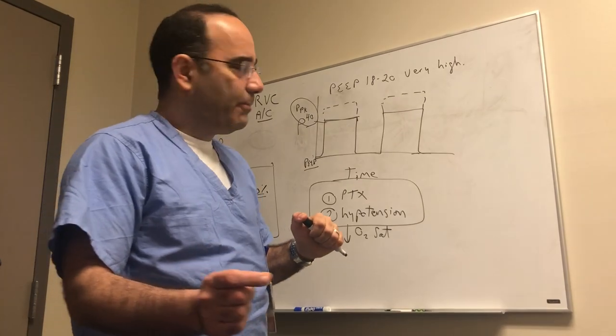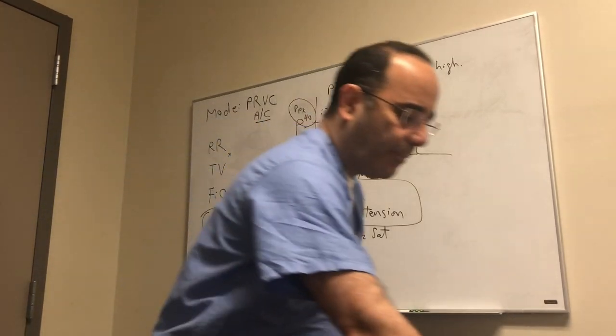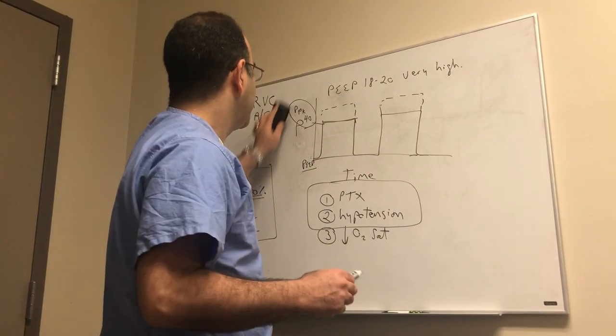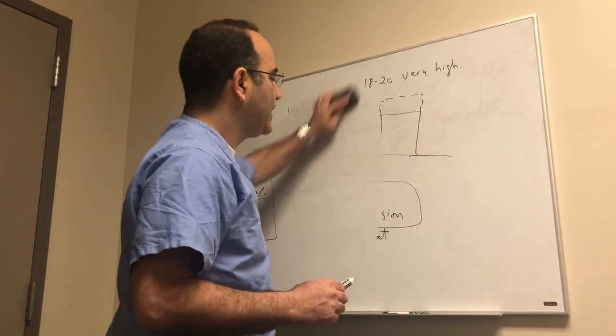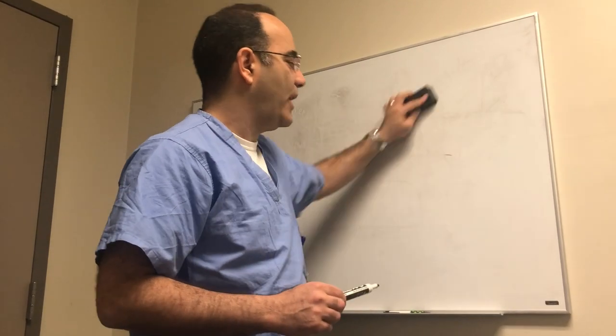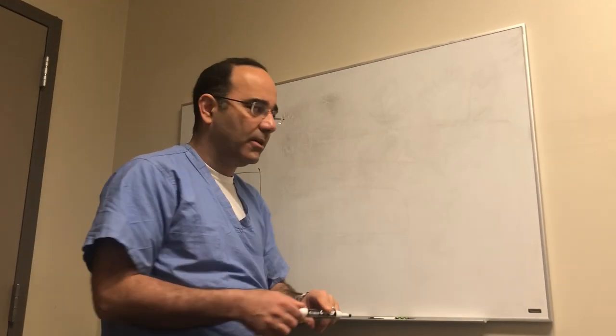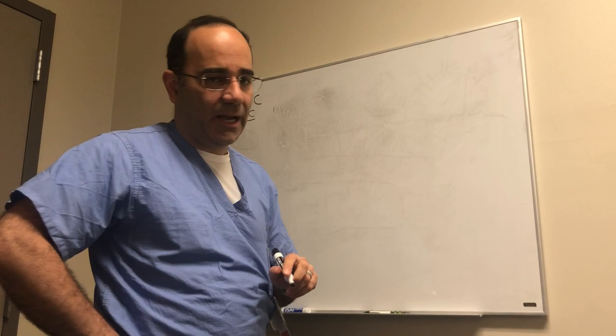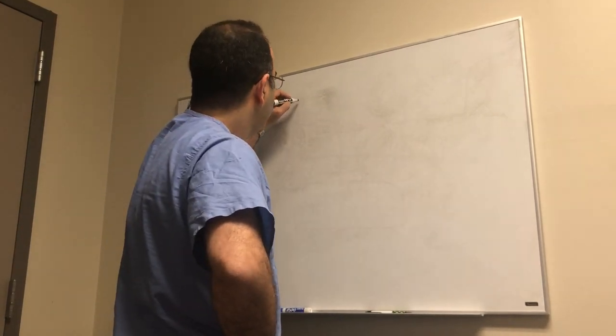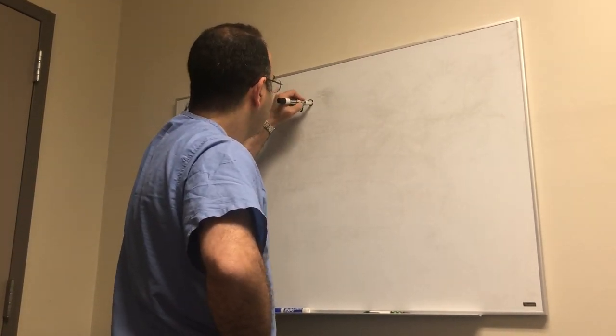A couple of last little points that might help you out. If your patient is desaturating on you quickly despite all your maneuvers and you've ruled out things like pneumothorax, endotracheal tube dislodgement, you're thinking to yourself this is a lung problem, there's a couple of things you can do to try to buy yourself some time. For a sudden desat, for a decrease in O2 sat, there are some pharmacologic adjuncts you can give.